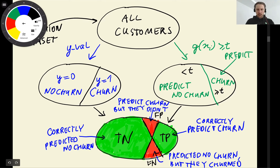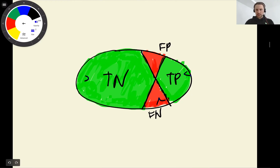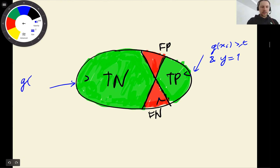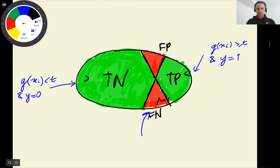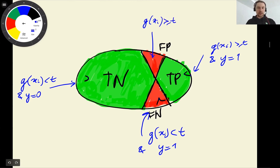For true positives, our prediction is above the threshold and the correct label is 1 (positive). For true negatives, our prediction indicates no churn and the correct label is 0 (negative). For false negatives, our prediction is negative but the actual label is positive — the customer is going to churn. For false positives, our prediction is positive but the actual label is negative — we predicted churn but they are not going to churn.